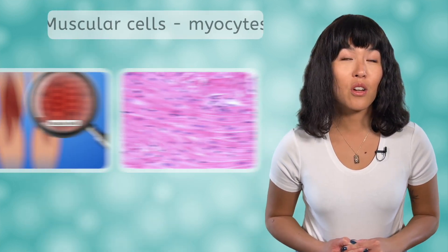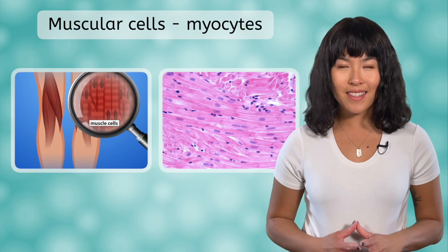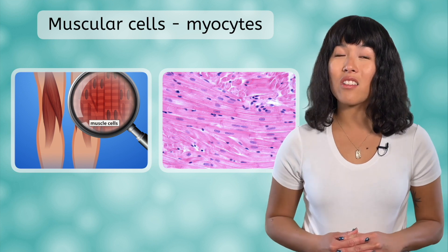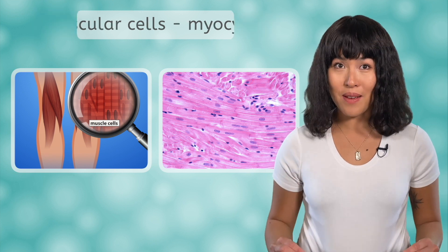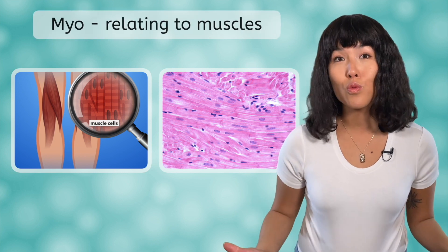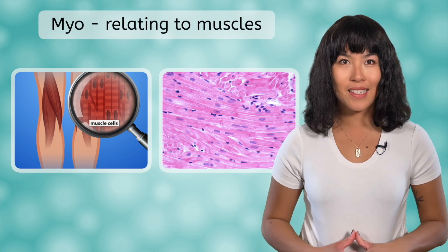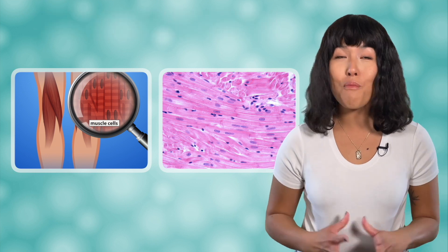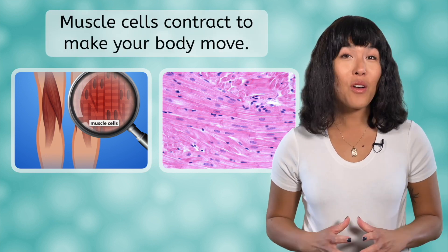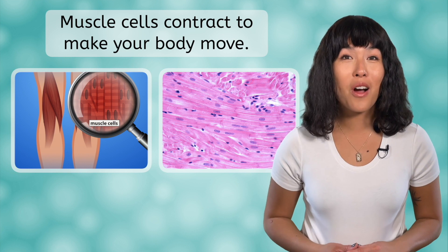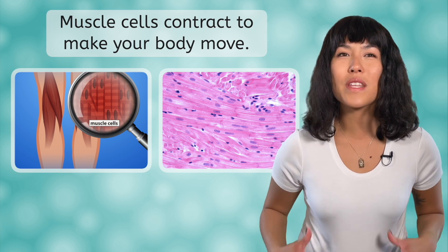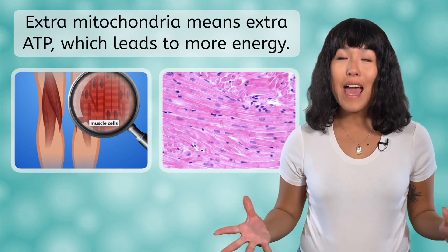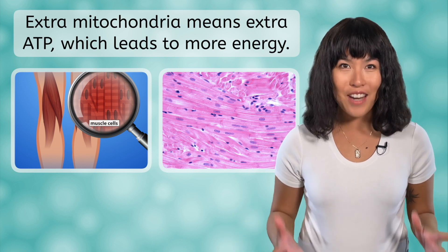Muscular cells are also known as myocytes. You will see this prefix, myo, a lot in our lesson on the muscular system because it is used in most words relating to muscles. These cells make your body move by contracting. They also have a lot of mitochondria, which provide cells with energy so that they can produce a lot of ATP and provide the body with energy.